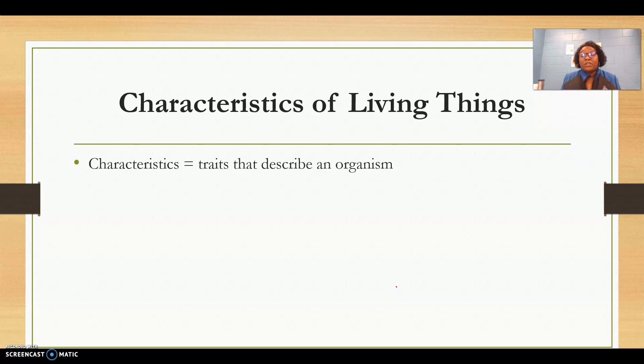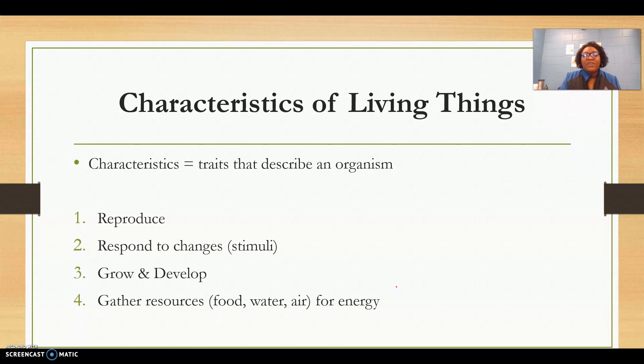When we're discussing the characteristics or traits of a living thing, it's important for us to know that all living things must be able to do these four things. All organisms must be able to reproduce, respond to changes, that's inside changes and outside changes, they must be able to grow and develop, and they must be able to gather food, water, and air for energy.